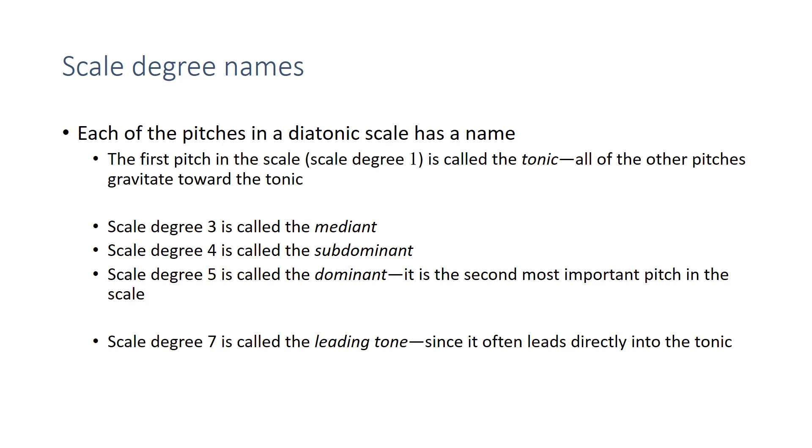Halfway between the dominant and the tonic is the mediant. So, here's the tonic, the dominant, the mediant is in the middle. Scale degree 3 is the mediant. Scale degree 2 is right above the tonic, so we call it the supertonic, super meaning above. The supertonic can often resolve down to the tonic as well. And then, probably the strangest name, halfway between the tonic and the subdominant is the submediant. Scale degree 6, the name is the submediant.